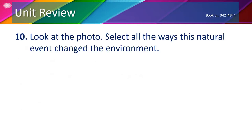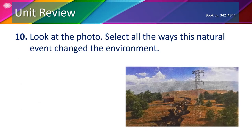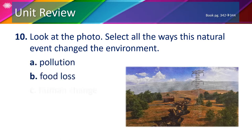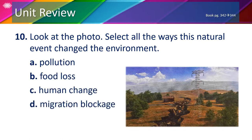And finally, number 10. In the photo we can see a crack in the land. How does this natural event change the environment? Is it A. Pollution; B. Food loss; C. Human change; or D. Migration blockage? We said earlier that when a crack in the land occurs, animals won't be able to move and they won't be able to find enough food. So the answers are B and D.